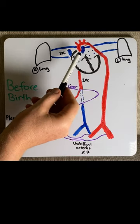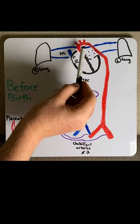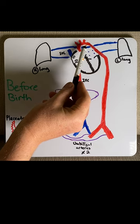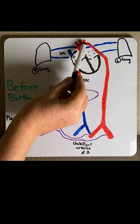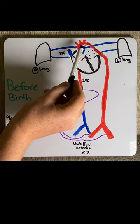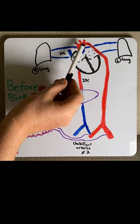But because the lungs are non-functional and collapsed, this vascular system is highly pressurized and therefore pushes blood across to the aorta via another shunt known as the ductus arteriosus.